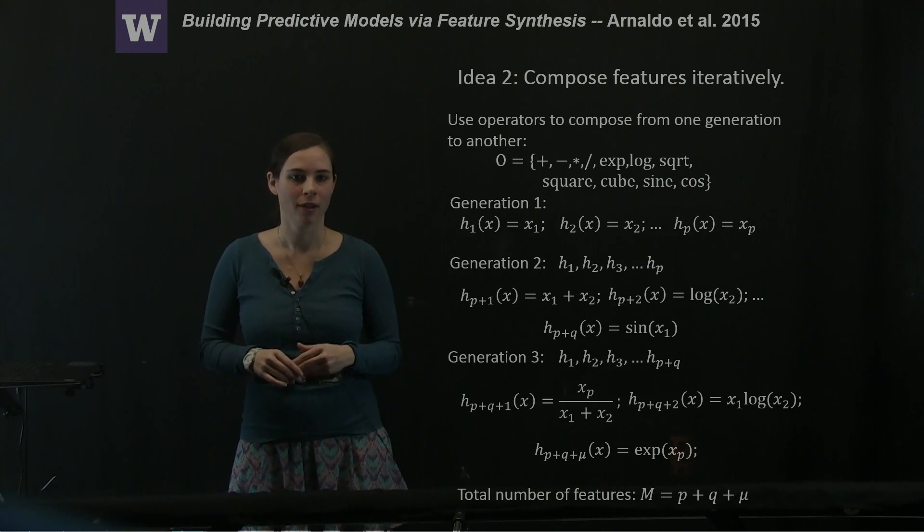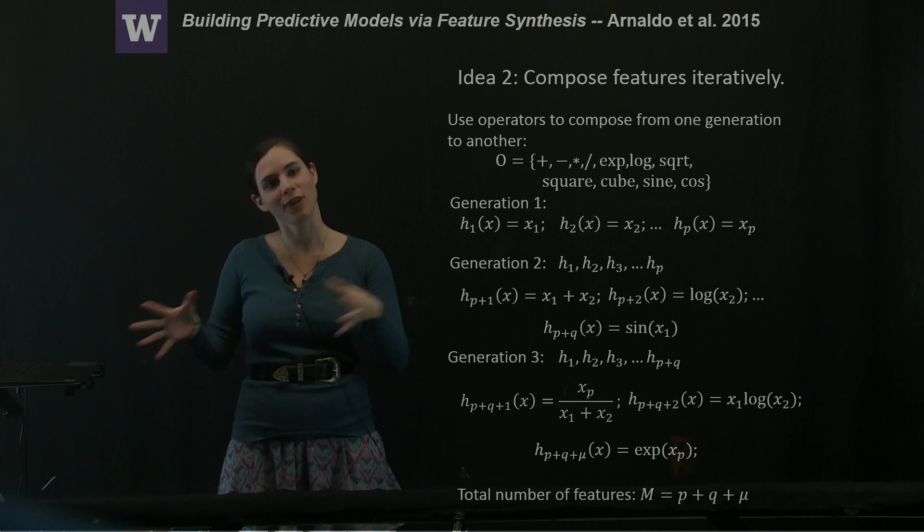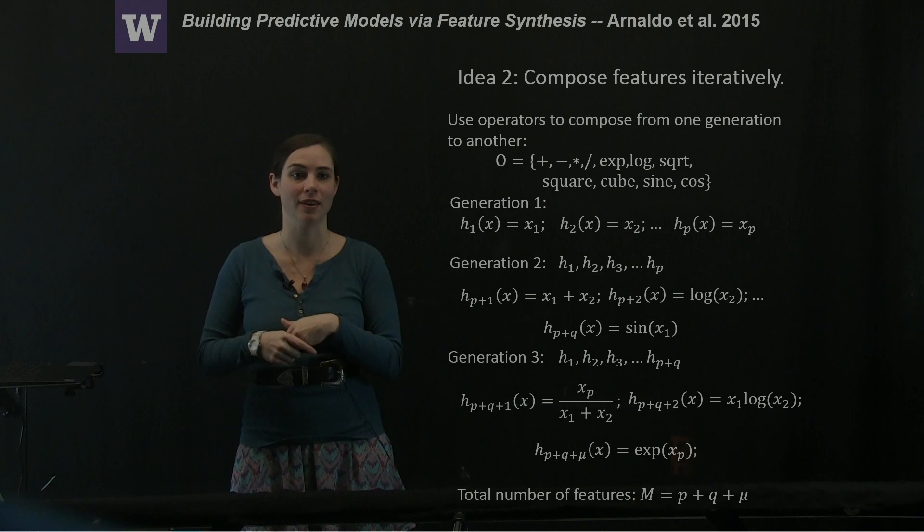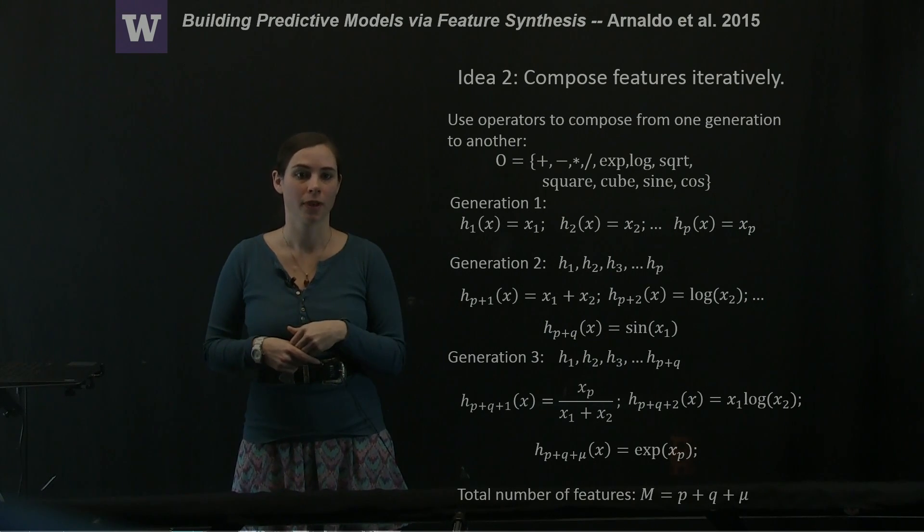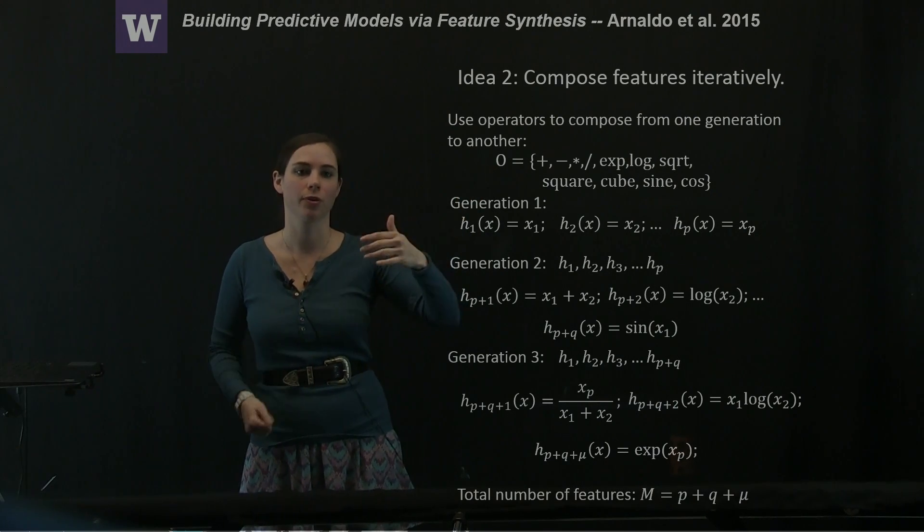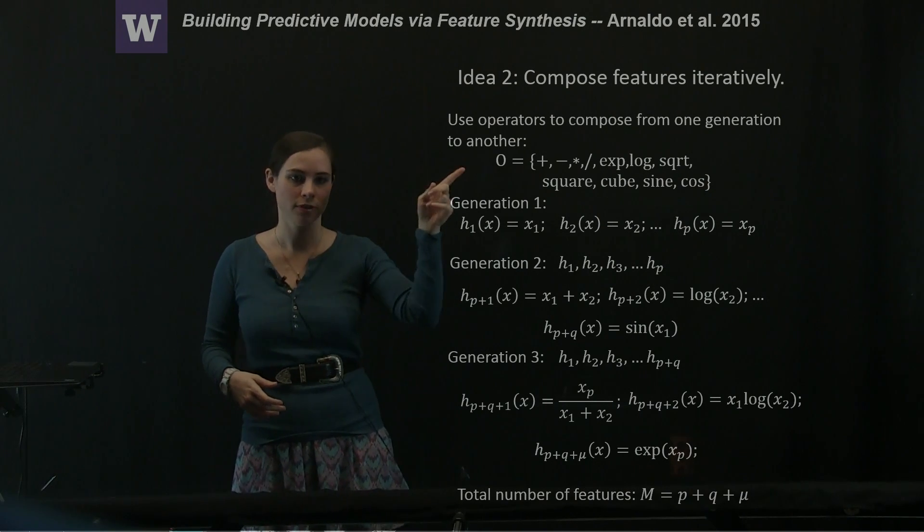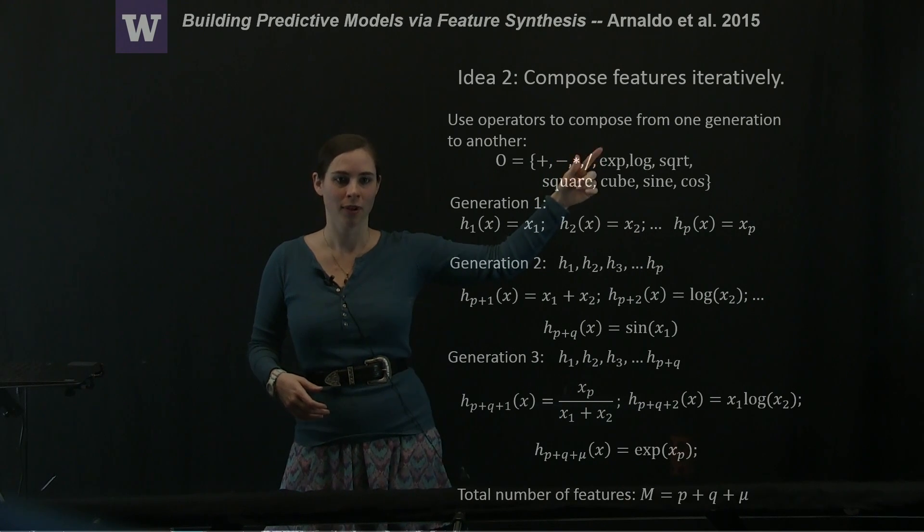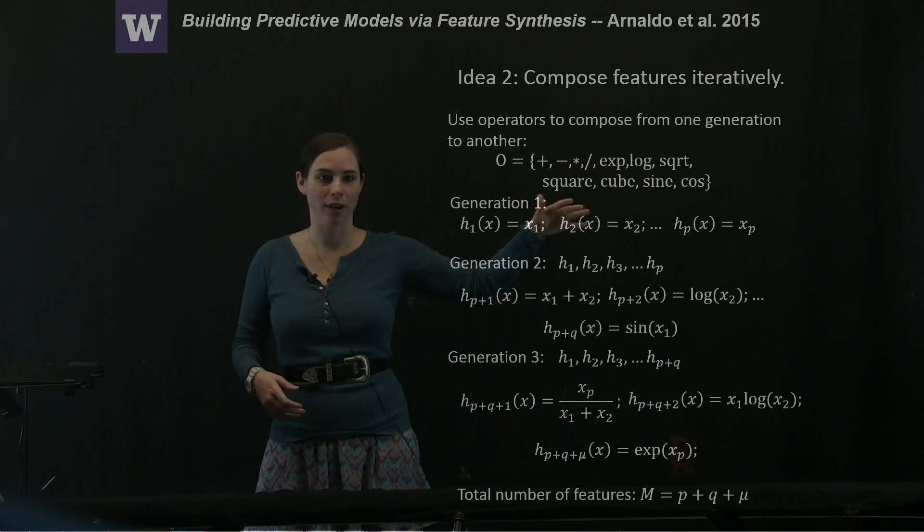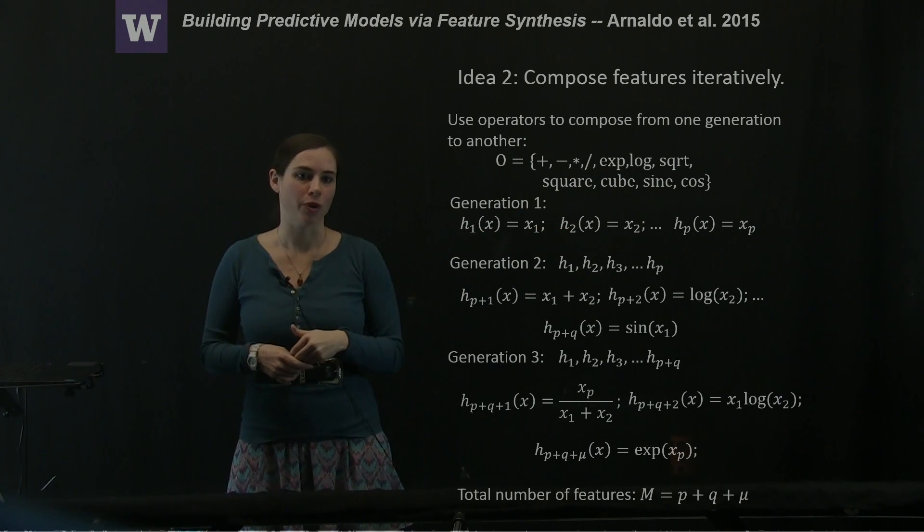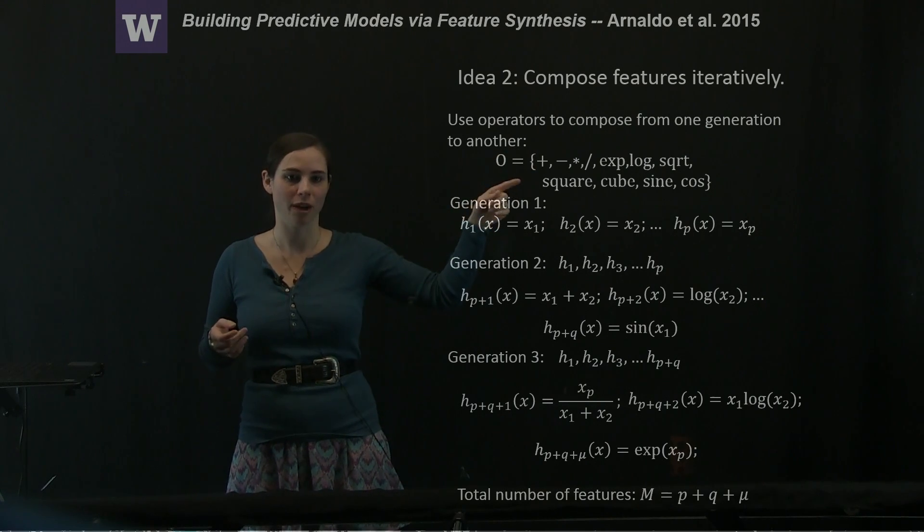So how do those features fit into this idea of creating generation after generation of iterably composed features? The authors first have some pool of operators that they're going to use to compose the features from one generation to another. The operators are just plus, minus, times, divide, exponent, log, square root, square, cube, et cetera. You could imagine adding more powers or tangent or whatever you want to this operator pool.